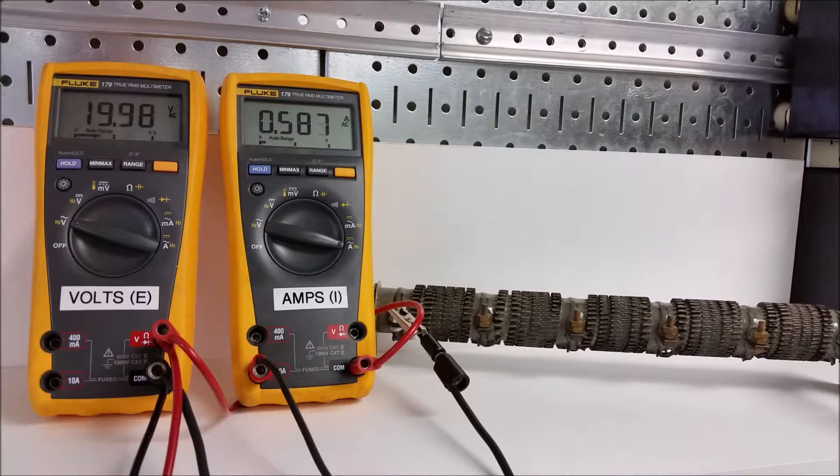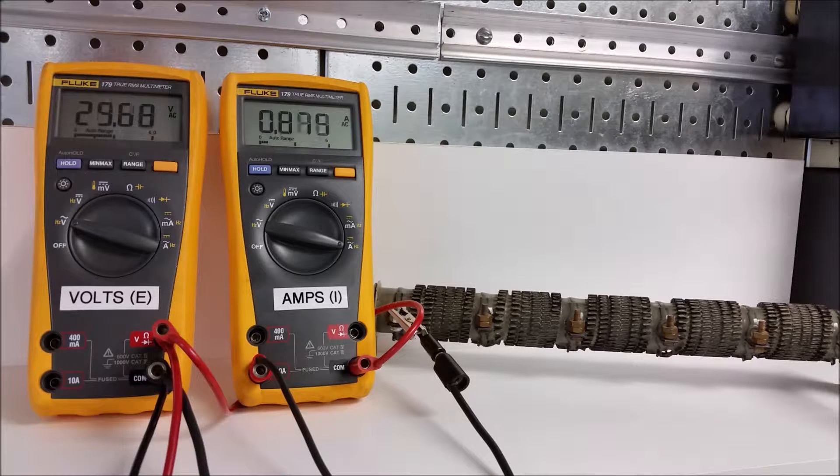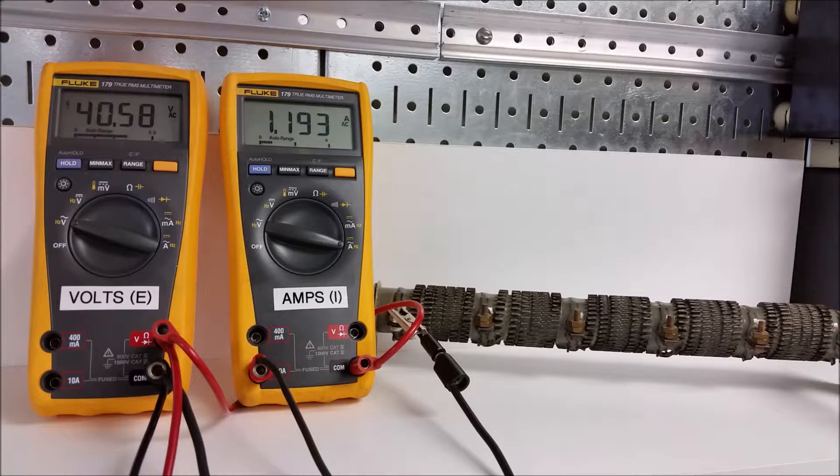So I'll pick up the voltage to about 20 volts, and we'll see what reference we get for ampacity. And so at 20 volts we get about 0.59 amps. Let's increase that to 40 volts, and we get about 1.18, 1.19.